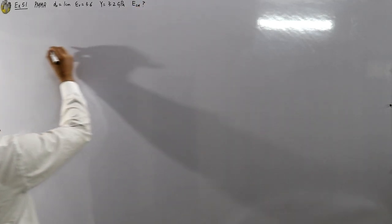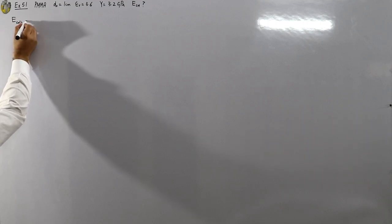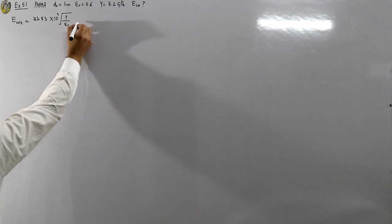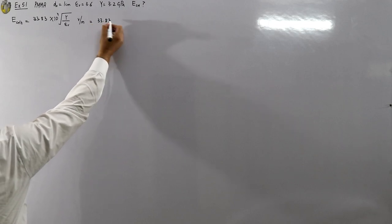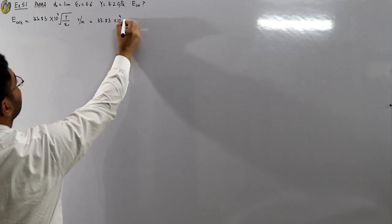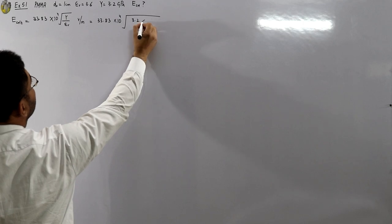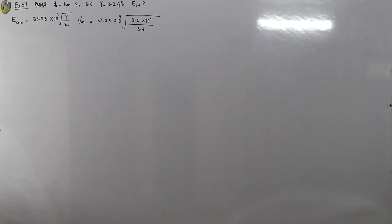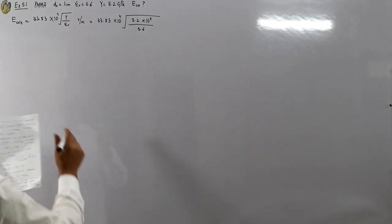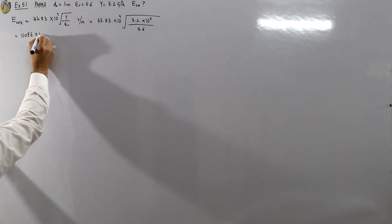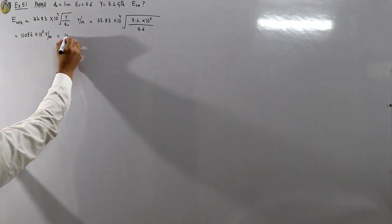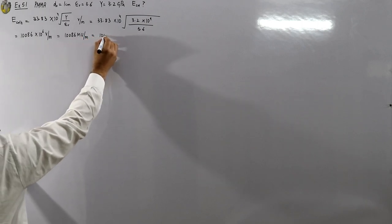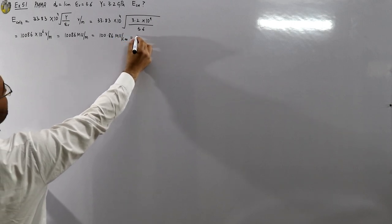Calculate the critical field for electromechanical breakdown. The formula is: E_critical = 33.83 × 10^4 × √(Young's modulus / relative permittivity) volts per meter. Substituting: 33.83 × √(3.2 × 10^9 / 3.6), this comes out to be 10086 × 10^6 V/m, or written as 10086 MV/m, which is 100.86 MV/cm.